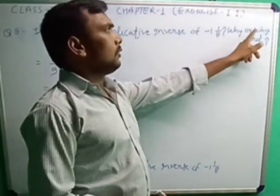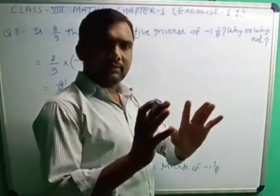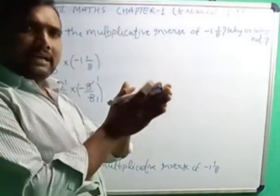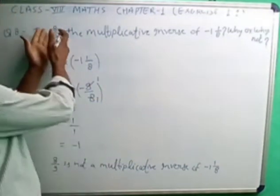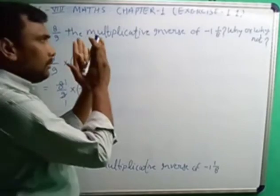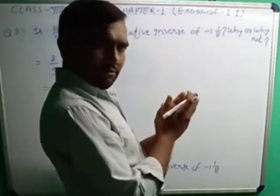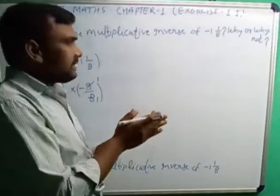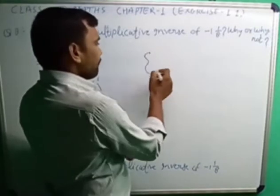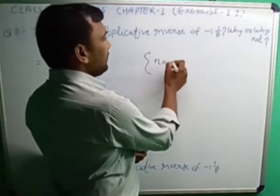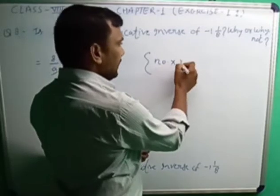This is the question. It means we have to tell if 8 by 9 is the multiplicative inverse of this value. The multiplicative inverse means number into its multiplicative inverse.